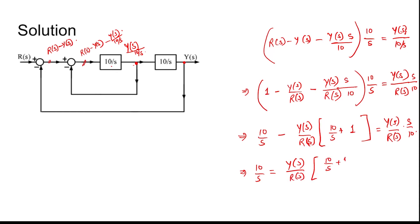10 by s plus 1 plus s by 10, 10 by s, which gives y(s) by r(s). This gives y(s) by r(s) is equal to 100 by s square plus 10s plus 10. This should be 100. It is coming 100. Y(s) by r(s) is 100 by s square plus 10s plus 100.